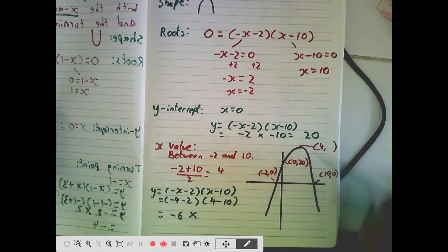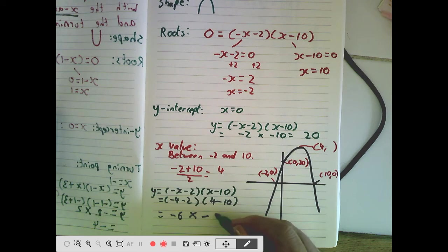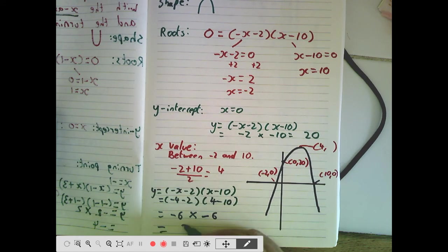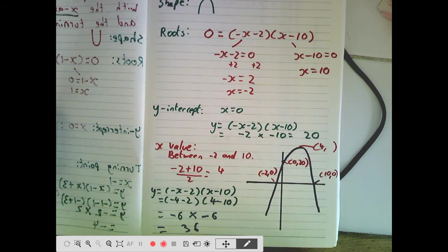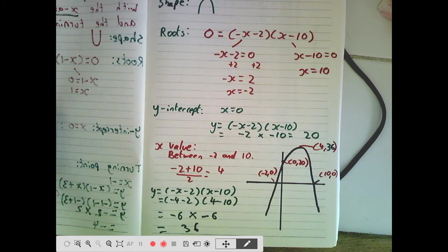So we really want to see a positive come out here. 4 take away 10, that looks to me like that's going to be minus 6. And minus 6 times minus 6 is positive 36. So the answer here would be 4, 36. And there we go. We've got a completely sketch graph, including the labelled points.